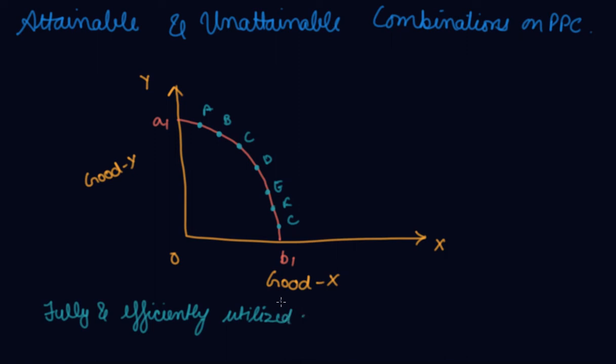So, now the question arises, will you produce somewhere here at say, W point? No, because at W, resources are inefficiently utilized.